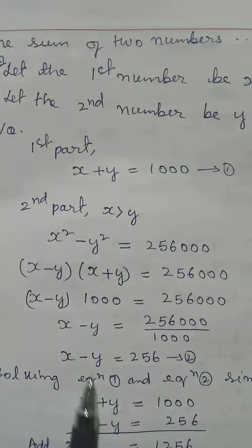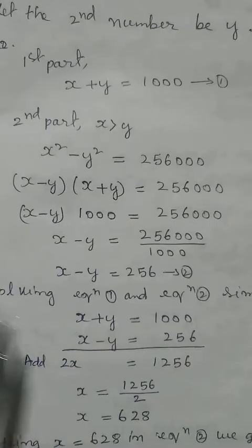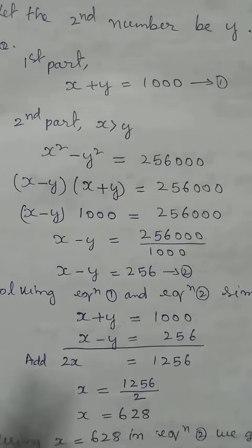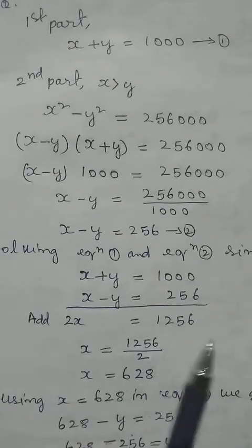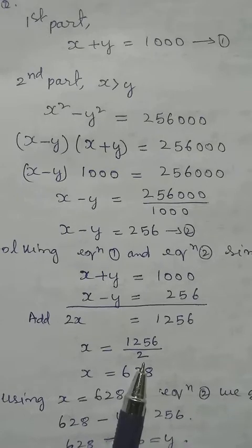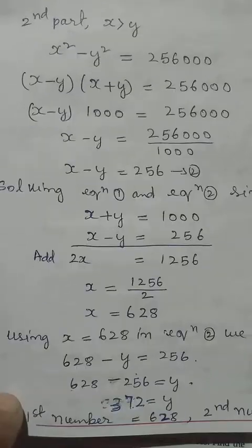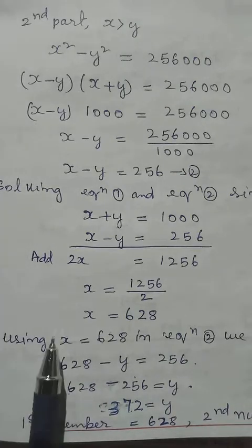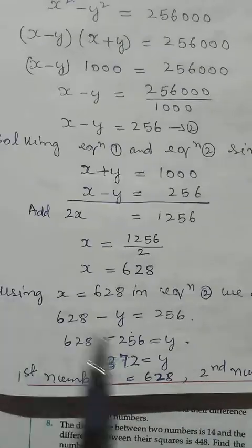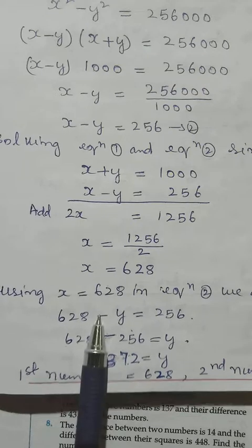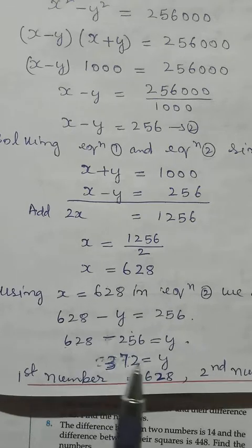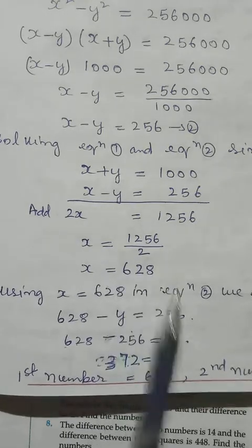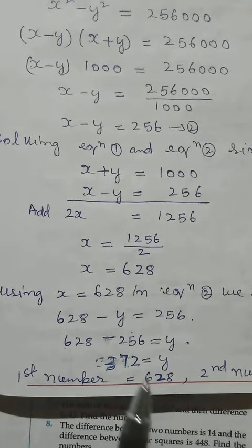Adding equations 1 and 2: the y terms cancel; 1 plus 1 gives 2x; 1000 plus 256 equals 1256. So x equals 1256 divided by 2, which equals 628. Substituting x equals 628 into equation 1: 628 plus y equals 1000, so y equals 372. The first number is 628 and the second number is 372.